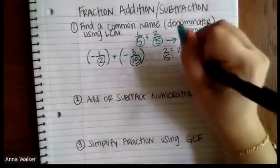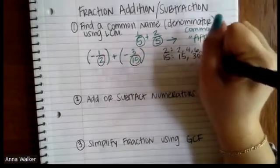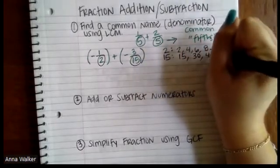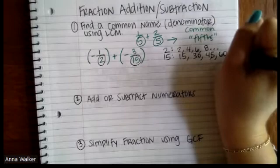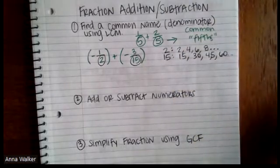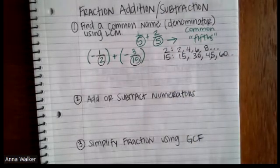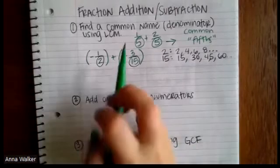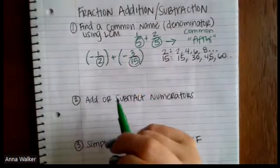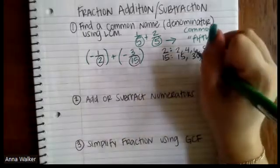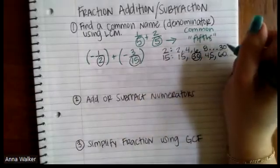If I count by 15, 15, 30, 45, 60, and it goes on and on and on as well. So if I were to find the least common, the one they have in common, that's the smallest, 30 is actually going to be that number.